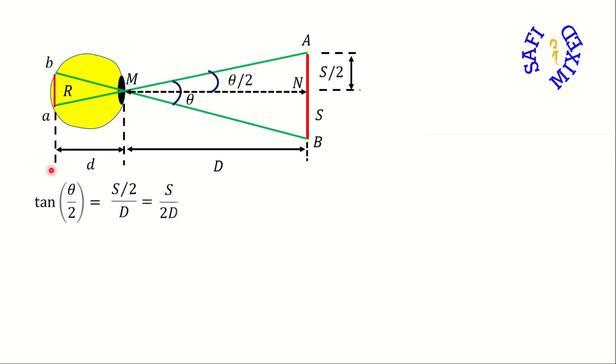So we can put the whole geometry of the figure into the simple equation, that is tan(θ/2) equals S divided by 2 the whole divided by D, which is equal to S divided by 2 times capital D. From this we can write θ equals 2 times arctan of S divided by 2 capital D.